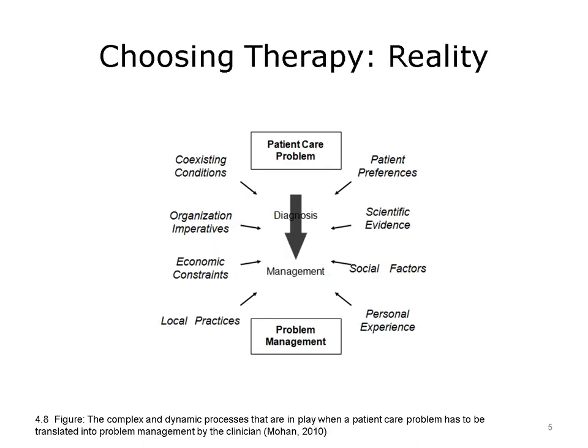A more realistic view is depicted in this slide. The process begins with the patient care problem. The clinician generally tries to reach a specific diagnosis, but often the diagnosis can't be determined or the clinician needs to begin management before diagnostic testing is complete. A diagnosis isn't always available or necessary to move on to problem management. With a working diagnosis in hand, the clinician can incorporate scientific evidence and organizational imperatives to make a decision about management. However, other considerations often exist that must be taken into account.